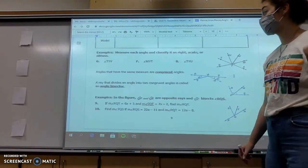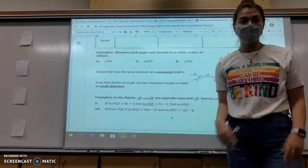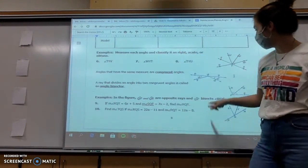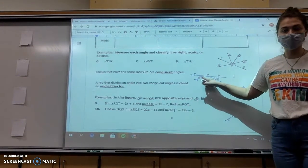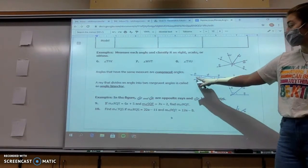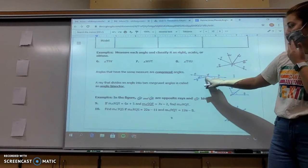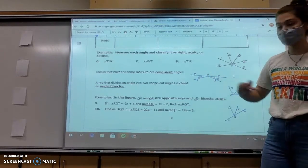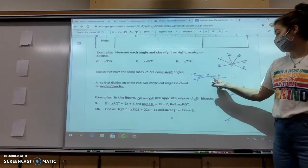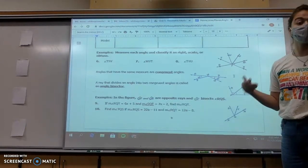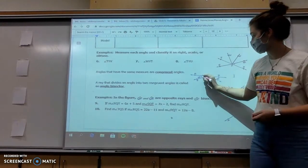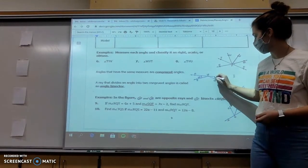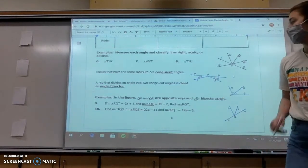The last couple things I want to talk about is congruent angles. If two angles are the same, they are congruent. And we always mark them with these little lines in between. So you can see that angle NMP is 25 degrees and angle RMQ is 25 degrees. So they are congruent. So we give them this little mark like so.